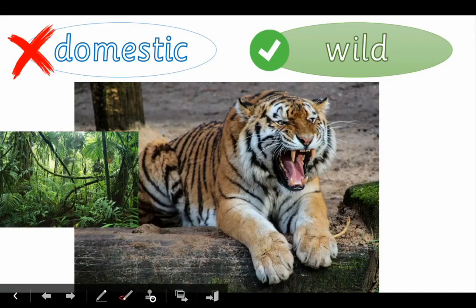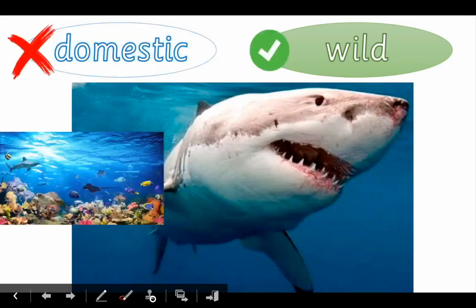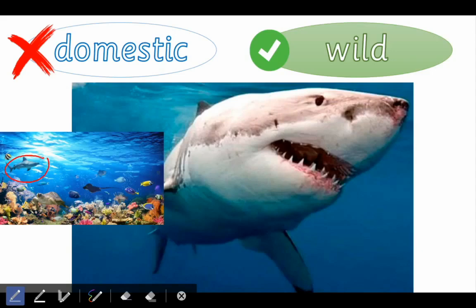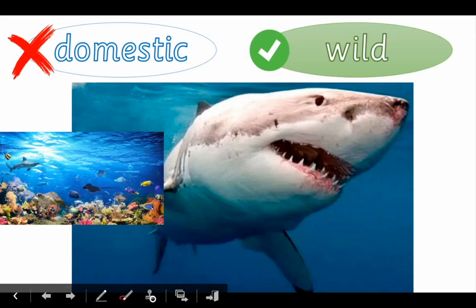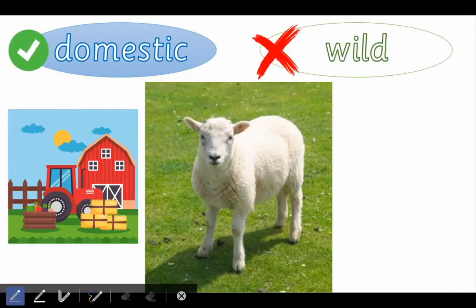Do you want to see the next one? Oh, it's a shark! Is this shark domestic or wild? It's not domestic — it doesn't live with you. It's a wild animal. You cannot have a shark in your house — no way, you must be crazy! What about this lamb? This is a baby sheep. Very good — this is a domestic animal because it lives on a farm.